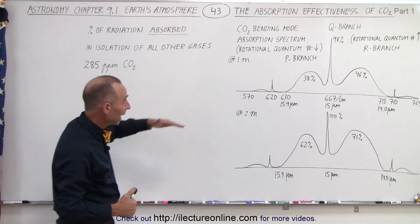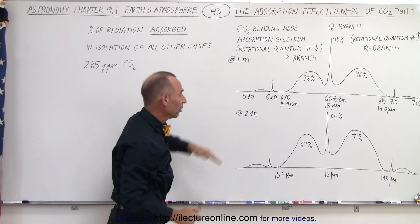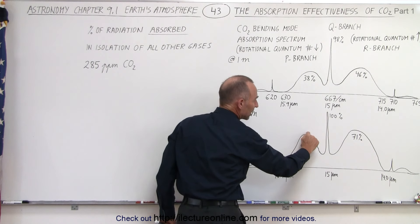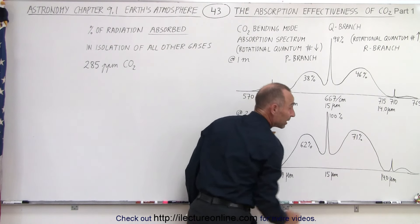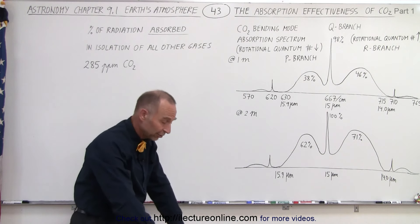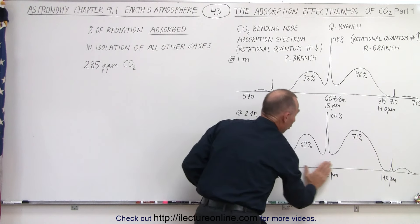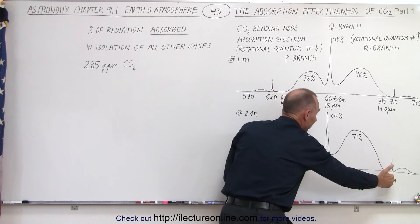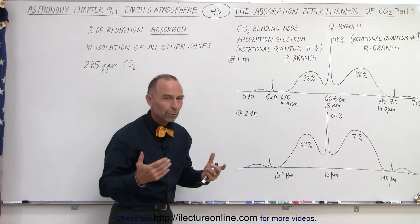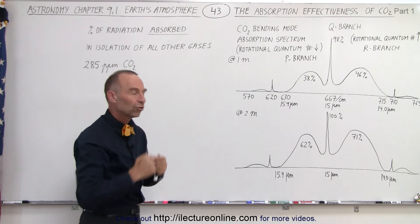But notice what happens now when we go from 1 meter in elevation to about 2 meters in elevation. The side lobes now are more effective with 62% at its peak here and 71% at its peak here. So you can begin to realize here that it doesn't take a lot of altitude before carbon dioxide will have absorbed just about all the frequencies, all the wavelengths between 14 and 16 micrometers. Later on, we're going to show you at various elevations how much of that radiation is absorbed.